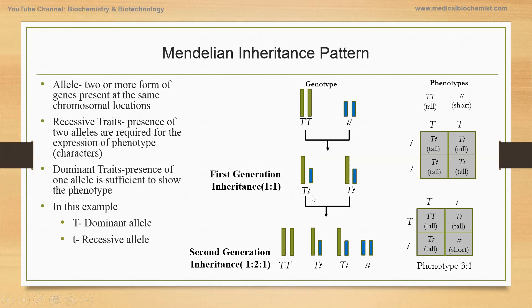That means you have one capitalized T and one lowercase t. In the next generation — this first cross being the first generation — when you cross these two progeny, you find that if the capital T from one parent crosses with the capital T from the other, that gives rise to homozygous TT. If it crosses with lowercase t, you get heterozygous capital T, lowercase t. If lowercase t from one parent crosses with capital T from the other, you get T and lowercase t. And if both lowercase t alleles cross, you get lowercase tt.